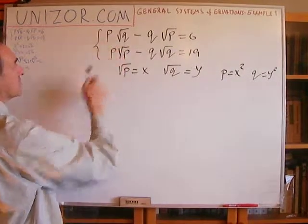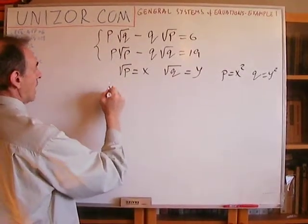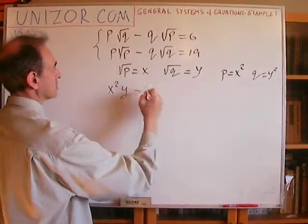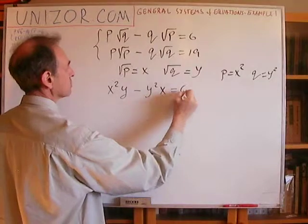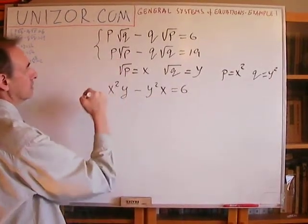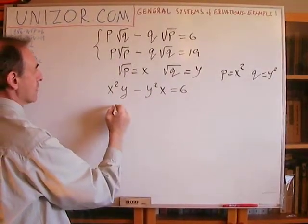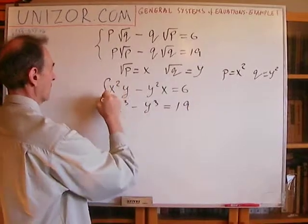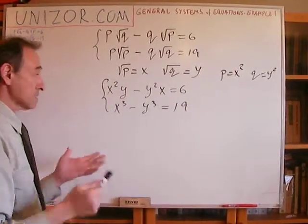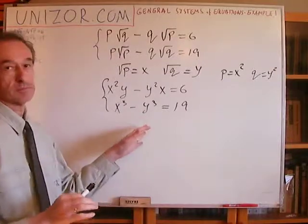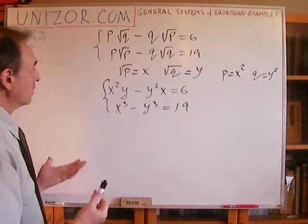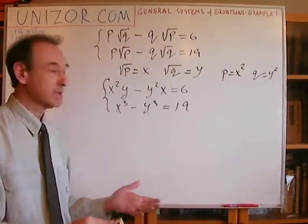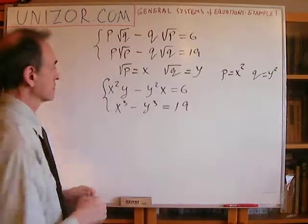Does it make our life easier? In a way, yes, because now we have: P times square root of Q is X squared·Y, minus Q times square root of P is Y squared·X, equals 6. And P times square root of P minus Q times square root of Q becomes X cubed minus Y cubed equals 19. It looks better because it's polynomial — not quadratic, but still polynomial, easier than dealing with square roots.